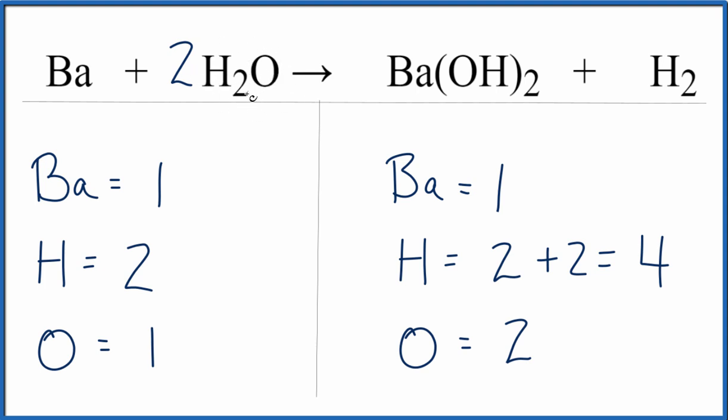So two times two, that'll give me four hydrogen atoms. And then the one times the two, that'll give me two oxygen atoms. And this equation will be balanced.